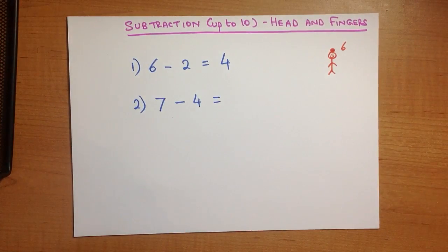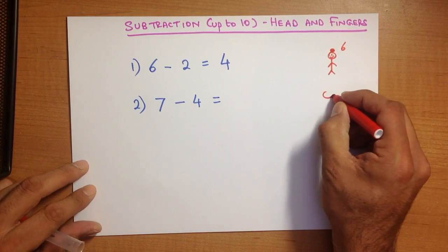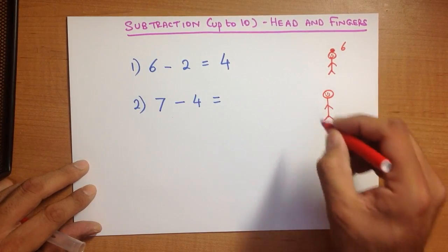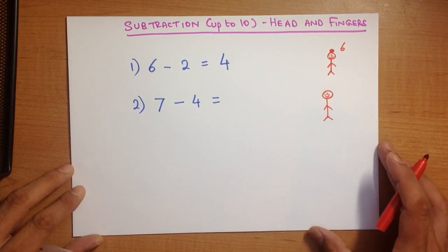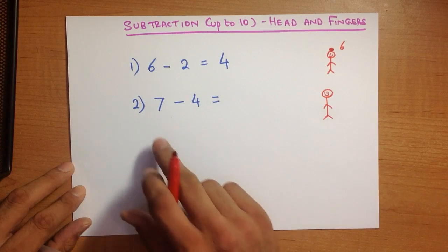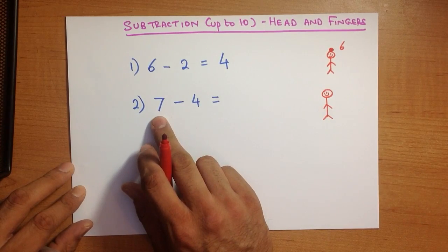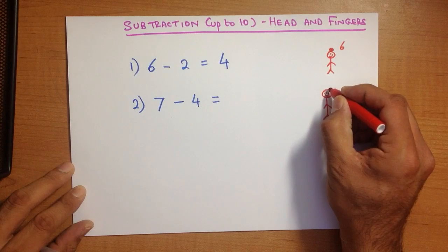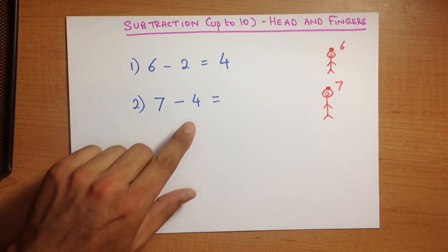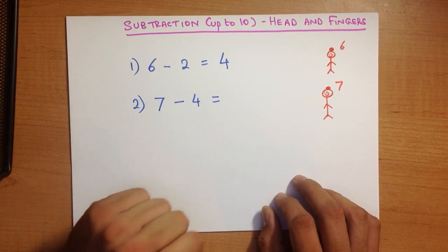What is 7 minus 4? So again, I'm going to use the head and fingers method. You don't have to draw this, I just do this to illustrate how to work this out. The first number is 7, so there is 7 on my head. The second number is 4, so let's count out 4.